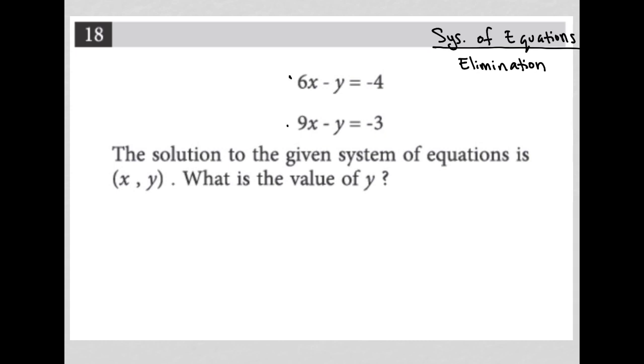I can already tell that it's easiest to eliminate the y value. I have a negative y here, a negative y there. So if I were to simply subtract the bottom equation, if I made this negative, made that positive, made this positive, then my y's would cross out and I'd end up with negative 3x. 6x minus 9x is equal to negative 4 plus 3, which is negative 1. And I get x equals 1 third.